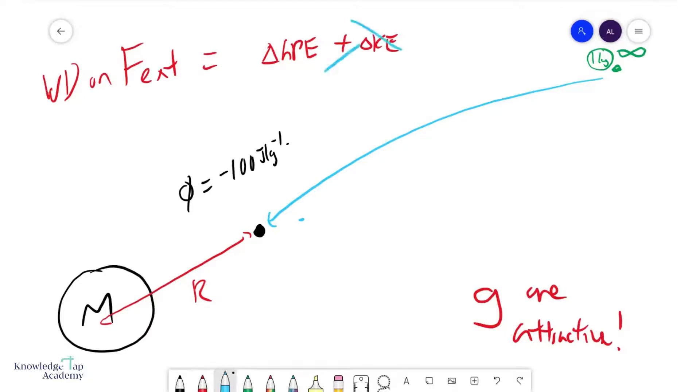And so we want to ensure that this KE term is zero. And so the work done by this external force is important to make sure that this 1 kilogram mass traveling from infinity does not change its speed.